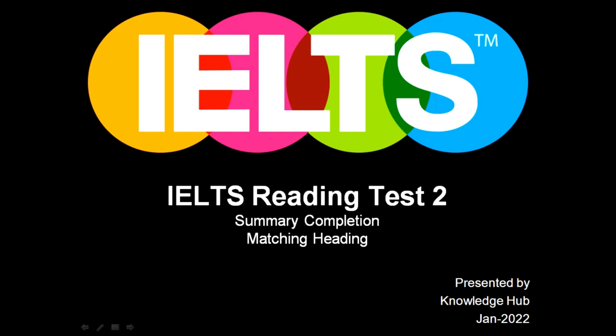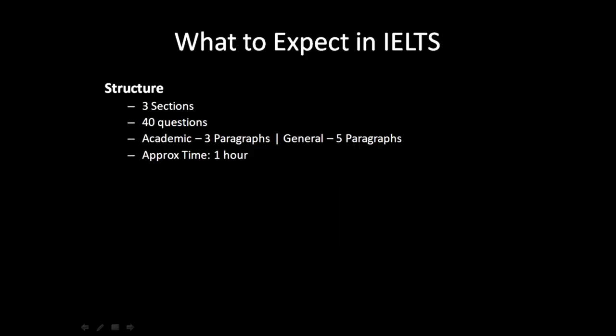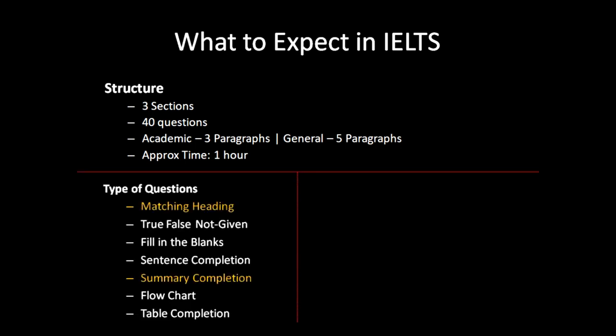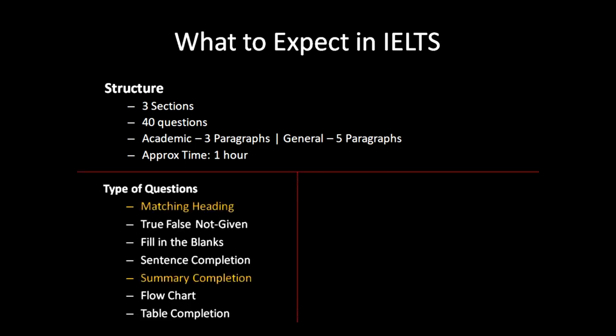The IELTS Reading Test has three sections and 40 questions. If you are giving the academic exam, it has three paragraphs. If you are giving the general exam, it has five paragraphs. The approximate time is around one hour. The different types of questions are: matching heading, true-false, fill in the blanks, sentence completion, summary completion, flowchart, and table completion.